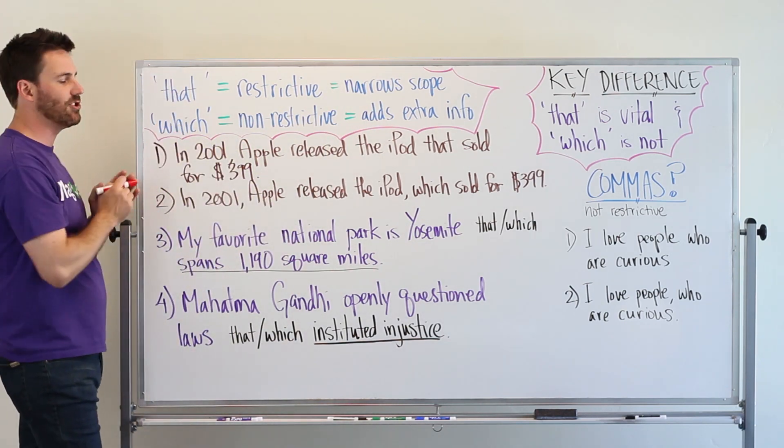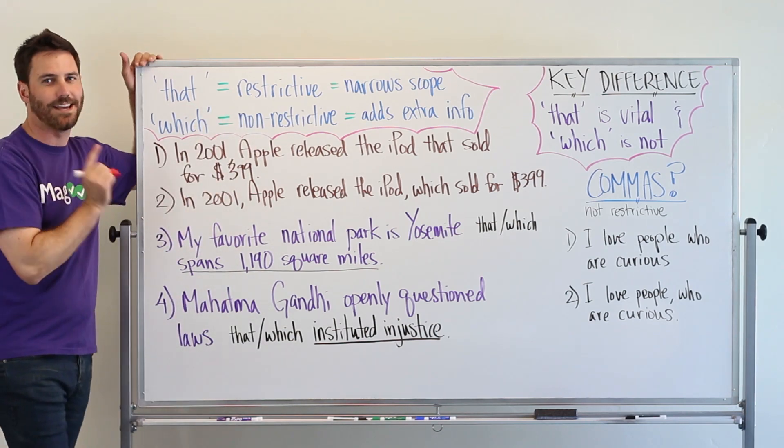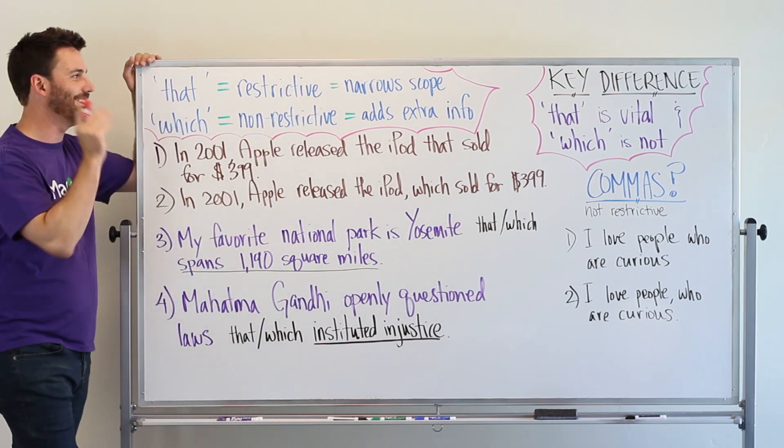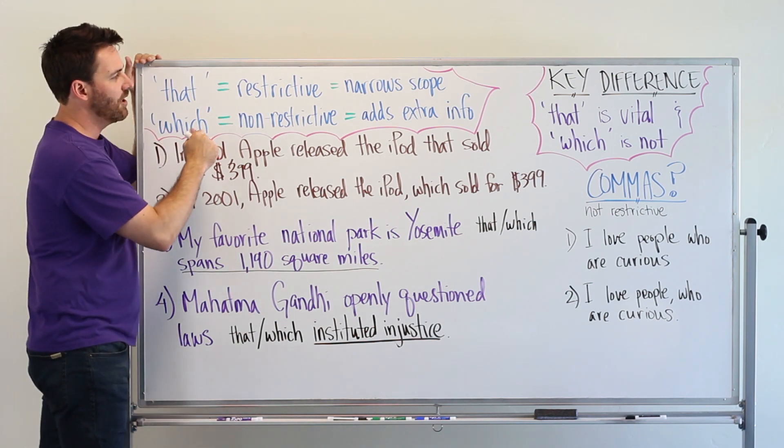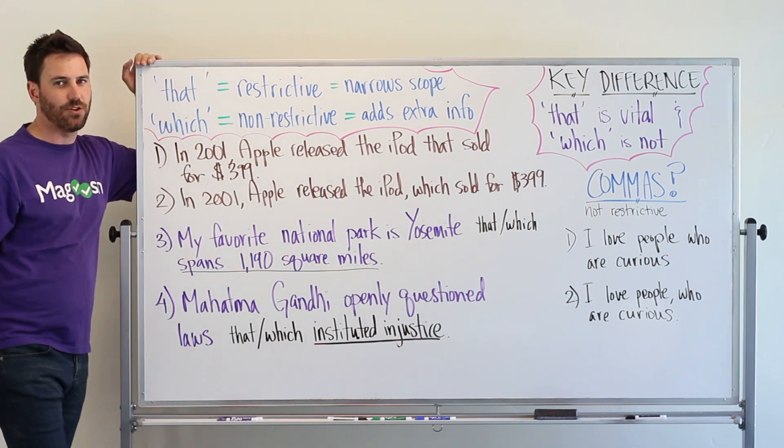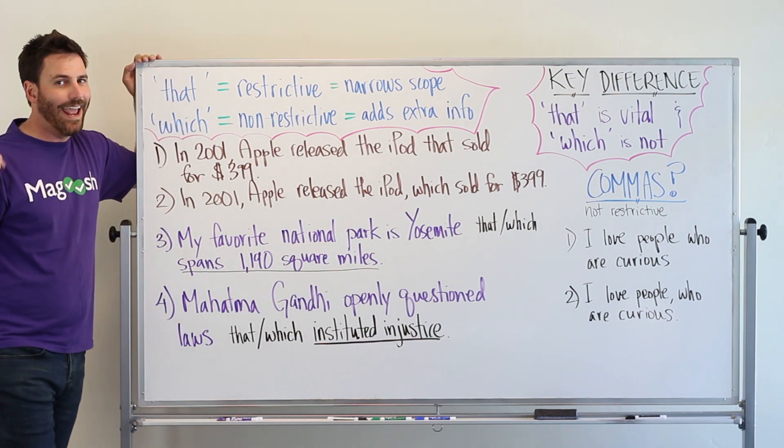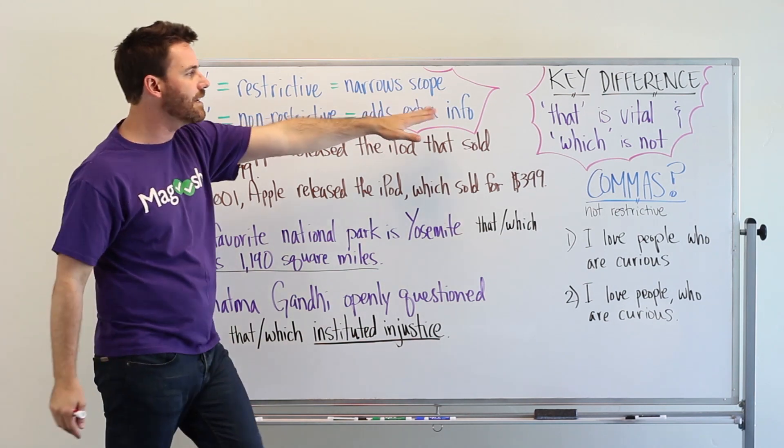Both that and which start a phrase or clause and it modifies a noun. When we have that, it narrows the scope of the noun and it's essential to the meaning of the sentence. And which adds extra information. So everything after the which is just nice to know extra information but you could remove it and not change the meaning of the sentence. And so that's the key difference here.